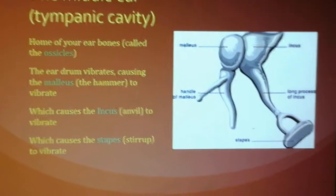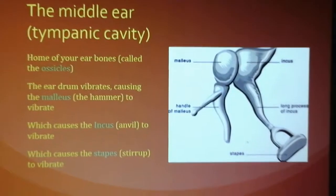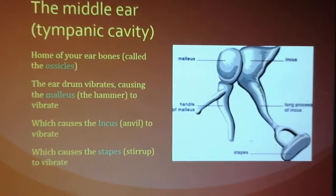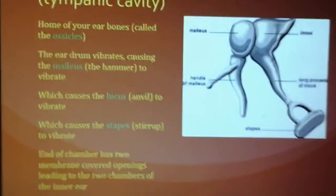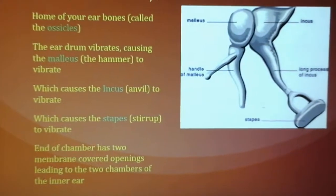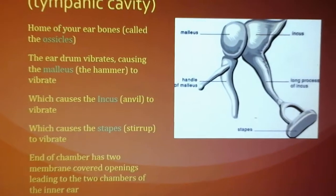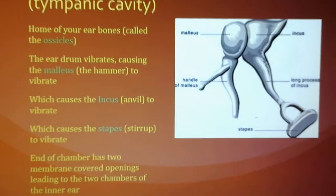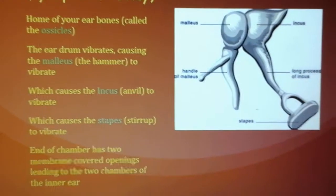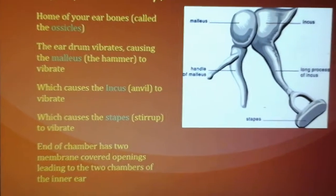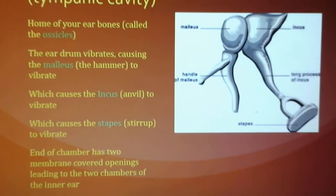To summarize the sound pathway: the pinna focuses sound to the auditory meatus; sound vibrates down the canal and hits the tympanium; the tympanium vibrates the malleus, which vibrates the incus, which vibrates the stapes. At the end of the middle ear chamber there are two openings. One chamber is responsible for your sense of sound, and another chamber is responsible for your sense of balance — both make up your inner ear.